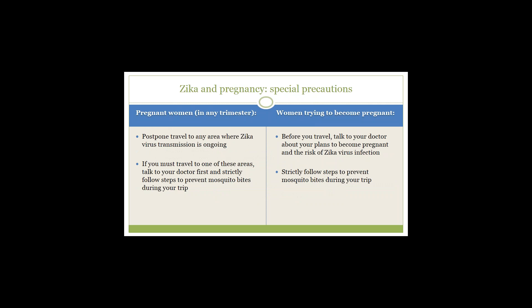Women who are pregnant in any trimester should postpone travel to any area where Zika virus is ongoing. If you must travel to one of these areas, talk to your doctor first and strictly follow steps to prevent mosquito bites. Men who live in or travel to areas of active Zika virus transmission who have a pregnant partner should abstain from sexual activity or consistently and correctly use condoms during sex — including vaginal intercourse, anal intercourse, or fellatio — for the duration of the pregnancy.